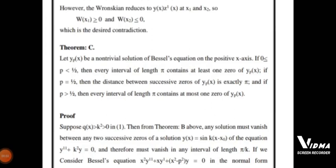Theorem C. Let y_p(x) be a non-trivial solution of Bessel's equation on the positive x-axis. If 0 ≤ p < 1/2, then every interval of length π contains at least one zero of y_p(x). If p = 1/2, then the distance between successive zeros of y_p(x) is exactly π. And if p > 1/2, then every interval of length π contains at most one zero of y_p(x).